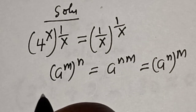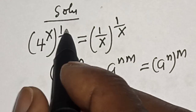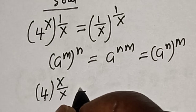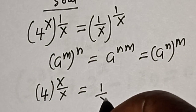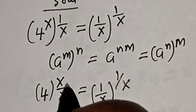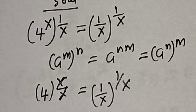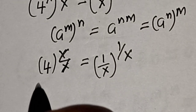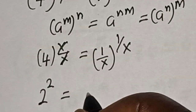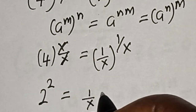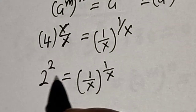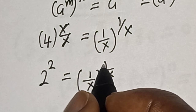Applying this, we have 4 raised to power 1 is equal to 1 over x, all raised to the power 1 over x. Since 4 equals 2 squared, we have 2 raised to power 2 equal to 1 over x, all raised to power 1 over x. By comparing the exponents, the base on both sides gives us 2.